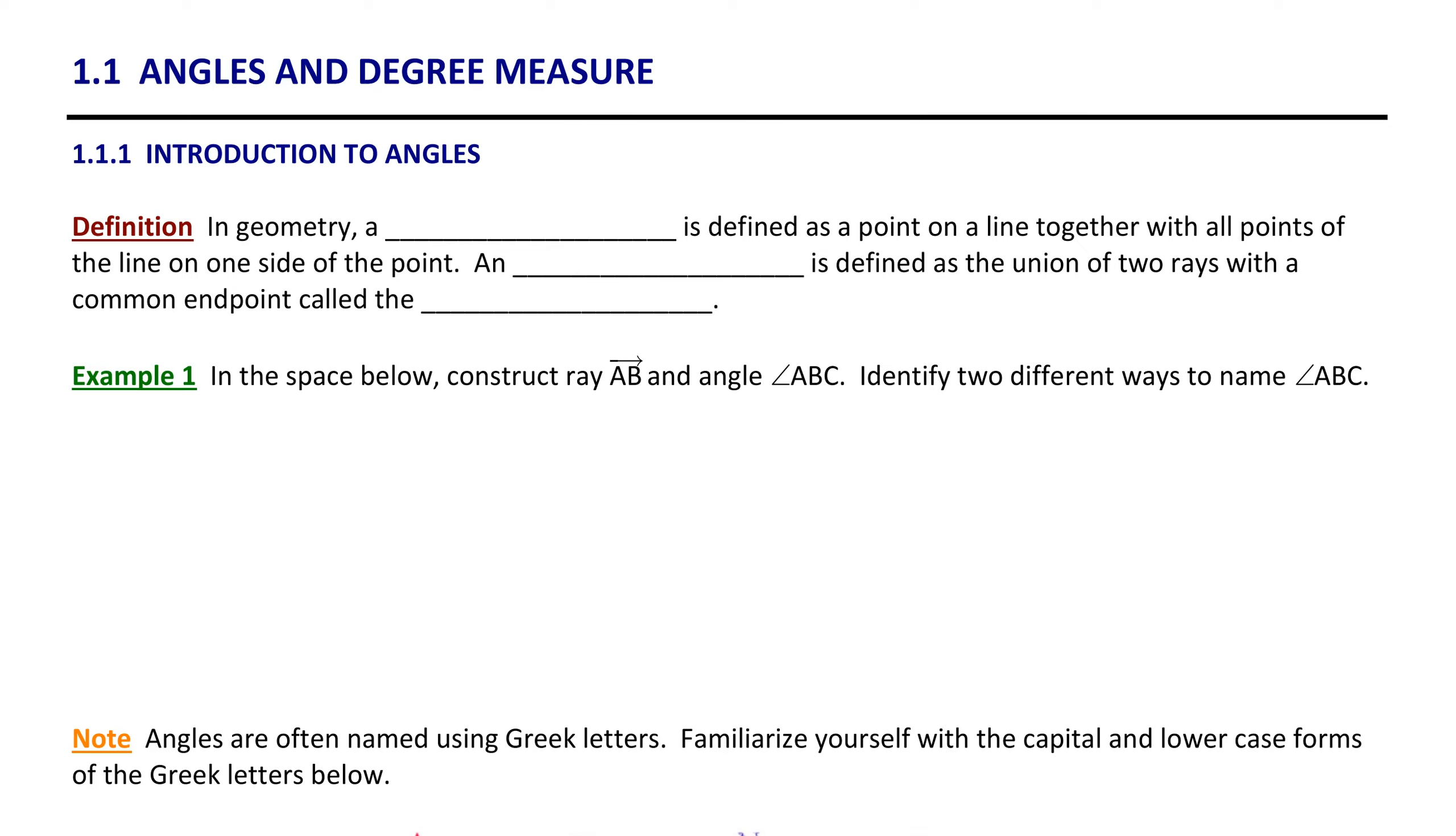In section 1.1, we're going to be focusing on an introduction to angles. Let's get started with a definition. In geometry, as you probably already know, a ray is defined as a point on a line together with all of the points on one side of that line.